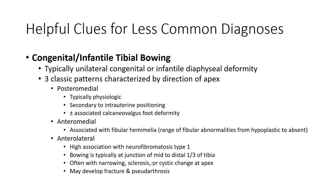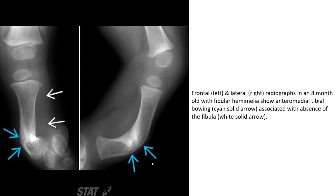Anterolateral: high association with neurofibromatosis type 1, with typical location at the mid to distal one-third of the tibia, often with narrowing, sclerosis, or cystic changes, and the affected tibia may develop fracture. This is frontal and lateral radiograph in an eight-month-old with fibula hemimelia showing anterior medial tibial bowing associated with absence of the fibula.